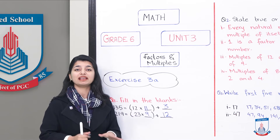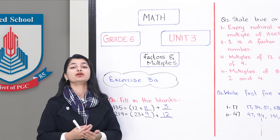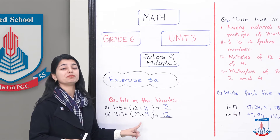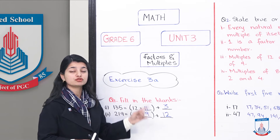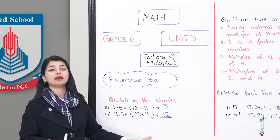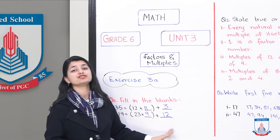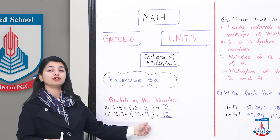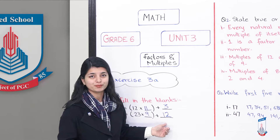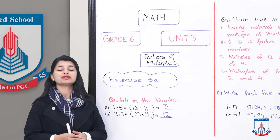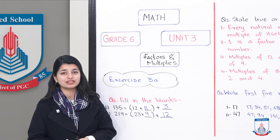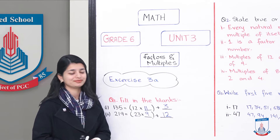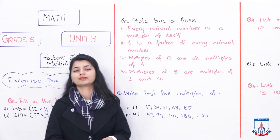For the third one, you have to attempt it the same way. The two values are not given, so you will divide them, solve them, and figure out your answer. Put the quotient in place and add the remainder. Now let's look at question number 2.